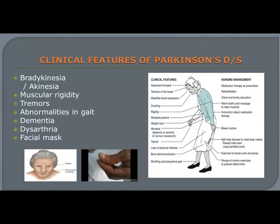Clinical features include bradykinesia and akinesia, muscular rigidity, tremors, abnormalities in gait, dementia, dysarthria, and facial mask. Bradykinesia is described as slow movement while akinesia is described as absence of movement.